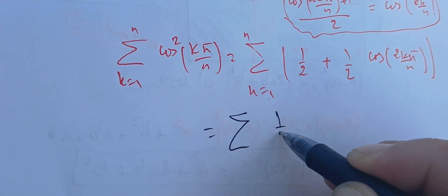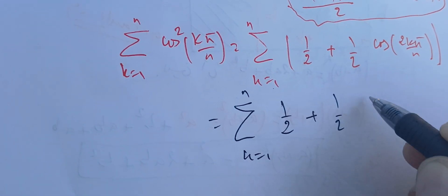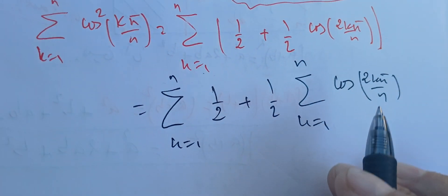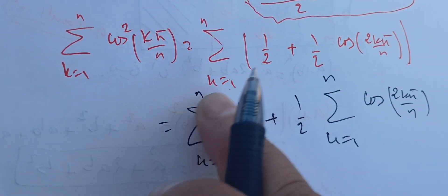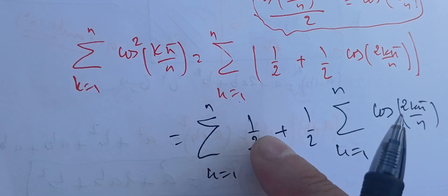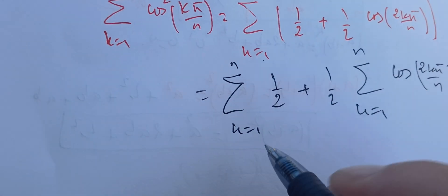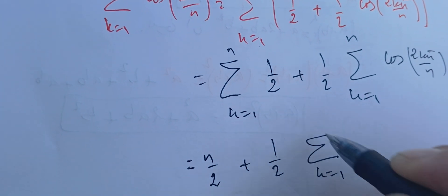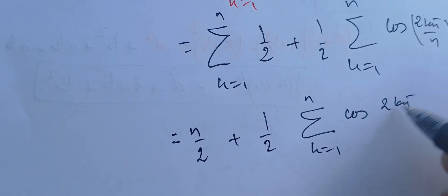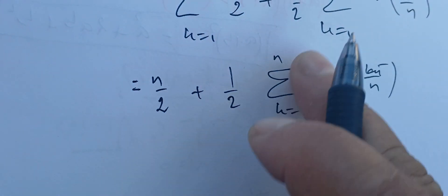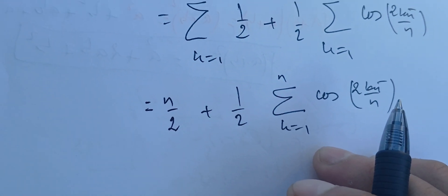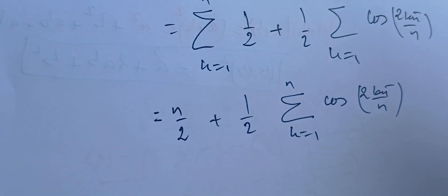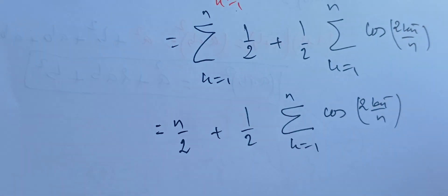This first part gives n/2, since we're summing 1/2 exactly n times. So we have n/2 plus (1/2)·Σcos(2kπ/n), k from 1 to n. Now I need to compute that cosine sum, and I'm going to use complex analysis to do it.